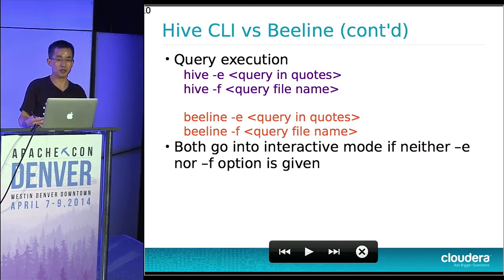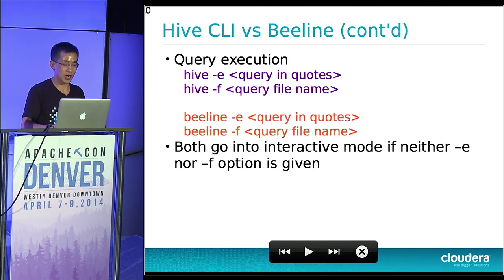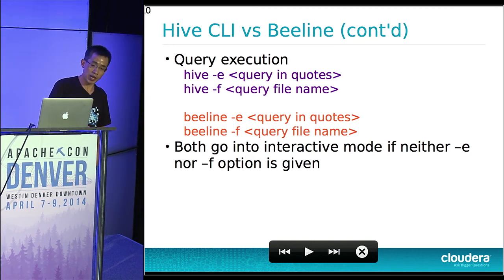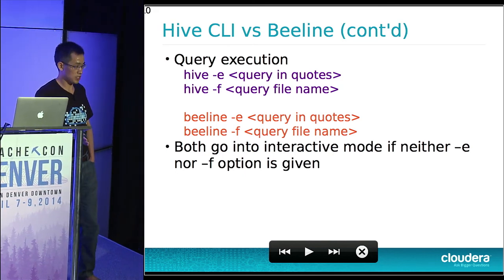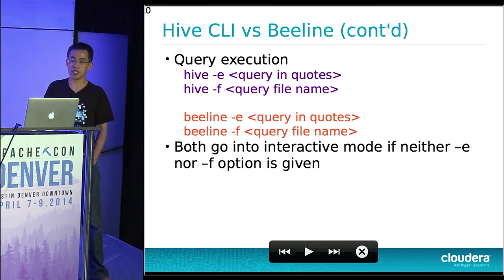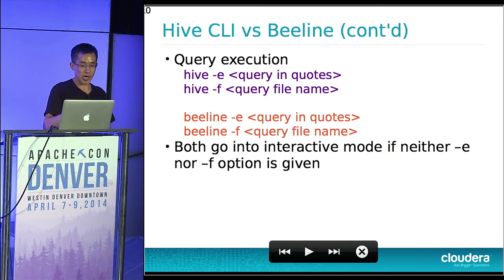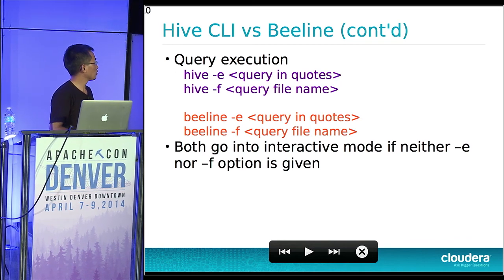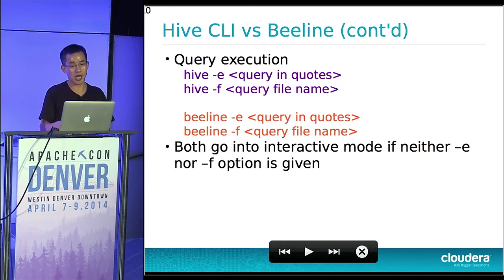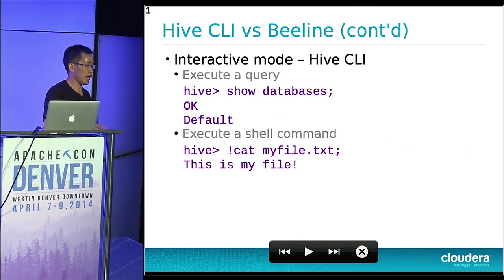There are two options for executing queries, provided by both Hive CLI and Beeline — they are identical. You can use the '-e' option followed by your query in quotes, or the '-f' option followed by your script filename. If no '-e' or '-f' option is given, both Hive CLI and Beeline go into interactive mode, where queries are executed line by line.